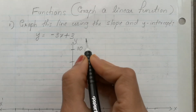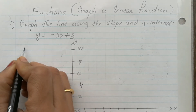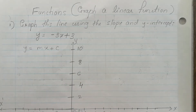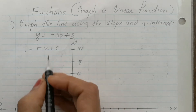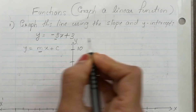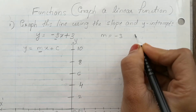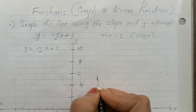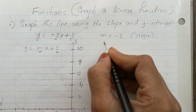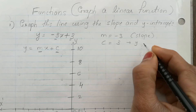First, compare this line y is equal to negative 3x plus 3 to the equation y is equal to mx plus c. Comparing these two, you can find that m is negative 3, and m is nothing but slope. So slope is negative 3. What is c? Here c is 3, and c is the y-intercept.